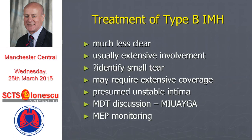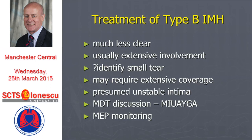The bottom line is that if you're going to treat a patient with type B IMH for troublesome symptoms — persistent pain, impending rupture — you're looking at extensive coverage, because it's difficult to identify exactly where the problem is. We tend to think: it's a type B picture, so let's start at the left subclavian and go as far as we need to go. It's a presumed unstable intima, and just targeting the central bit — for example, if there's a penetrating ulcer with associated intramural hematoma — you target the ulcer, but there's intramural hematoma on either side in unstable intima. So we have MDT discussion, and we've developed what we call the MUGIA strategy — Make It Up As You Go Along. We're all learning together; it's a carefully tailored discussion about what you actually do.